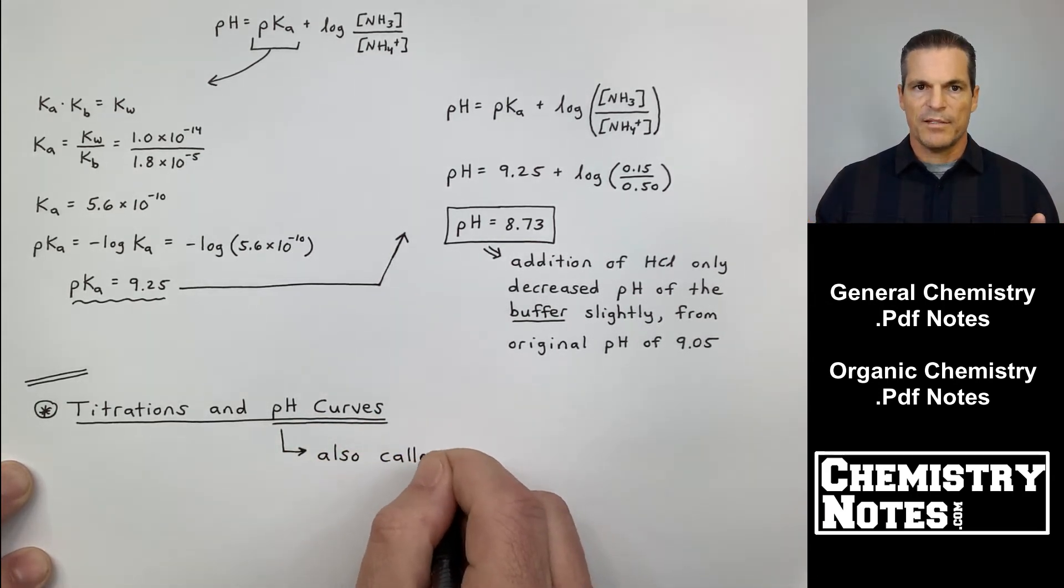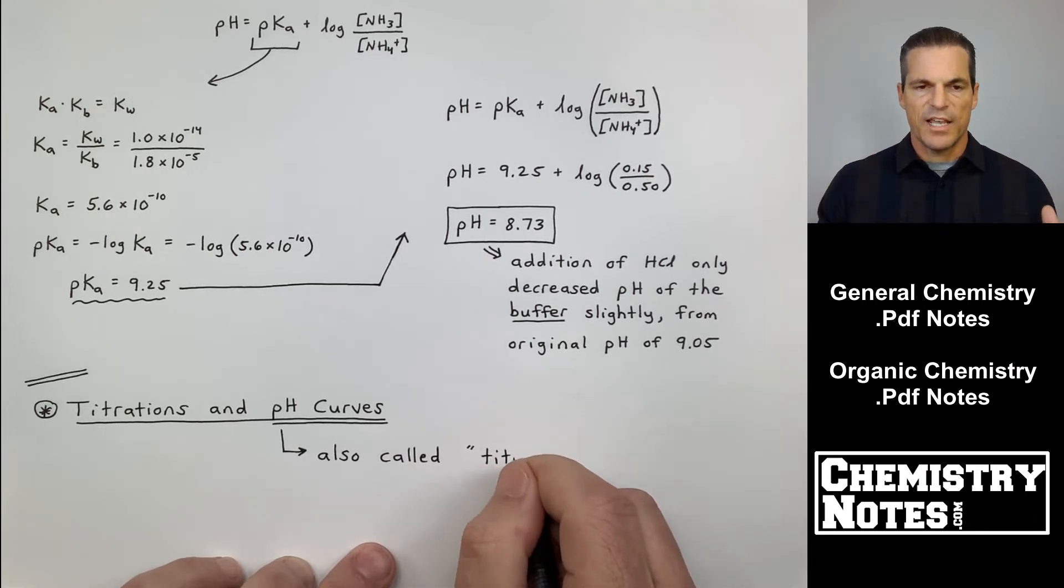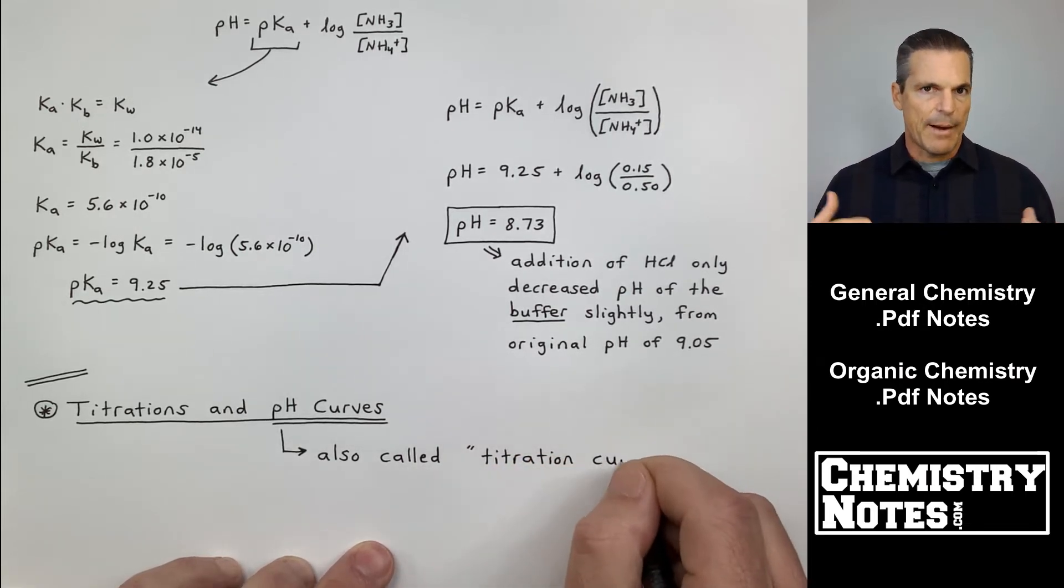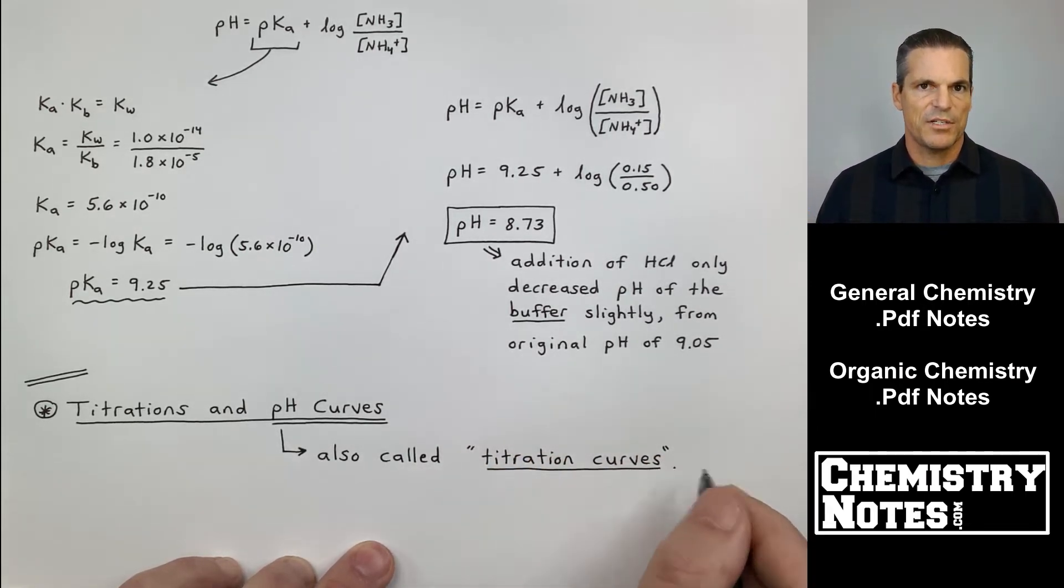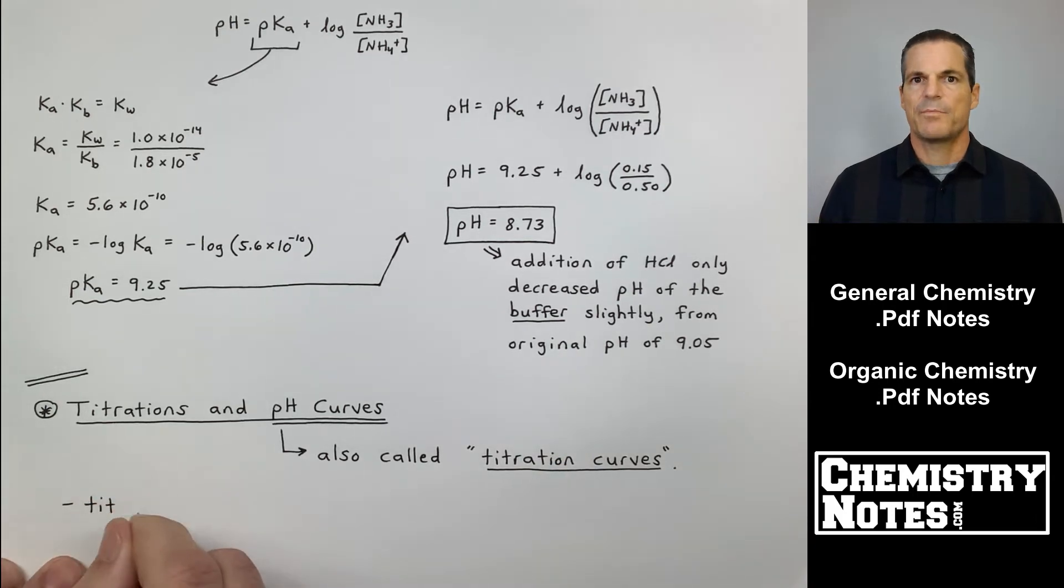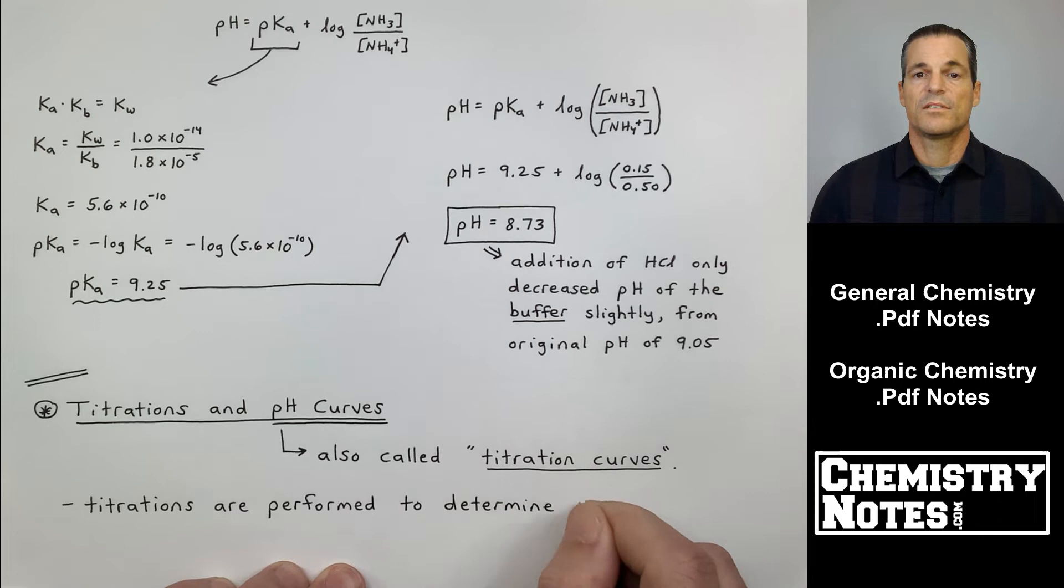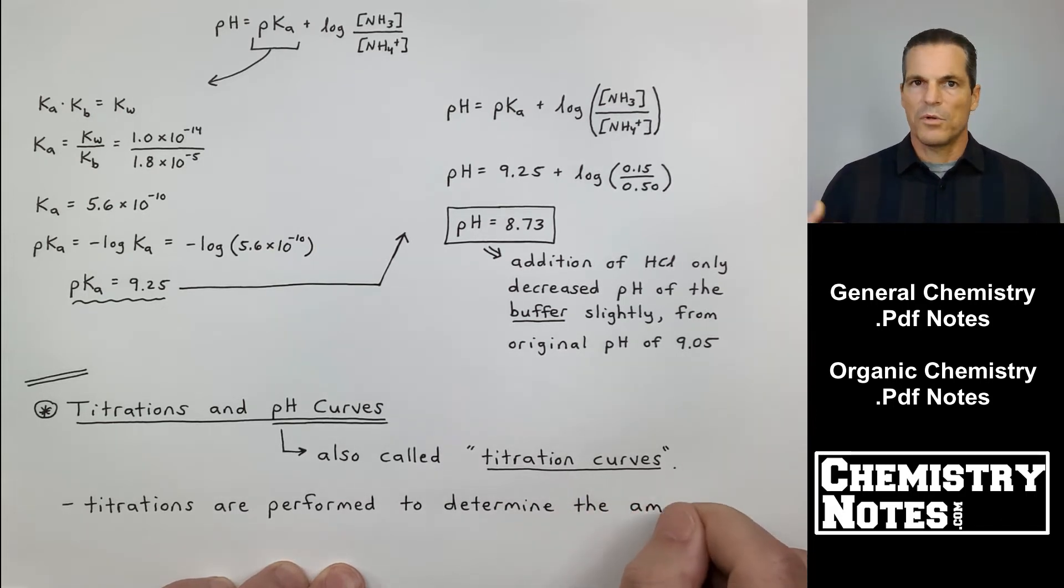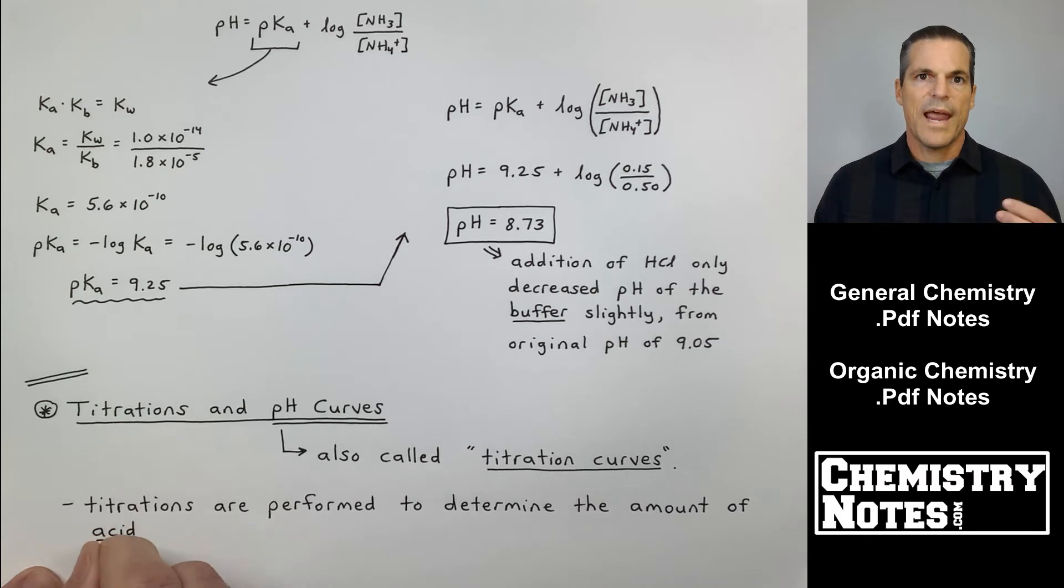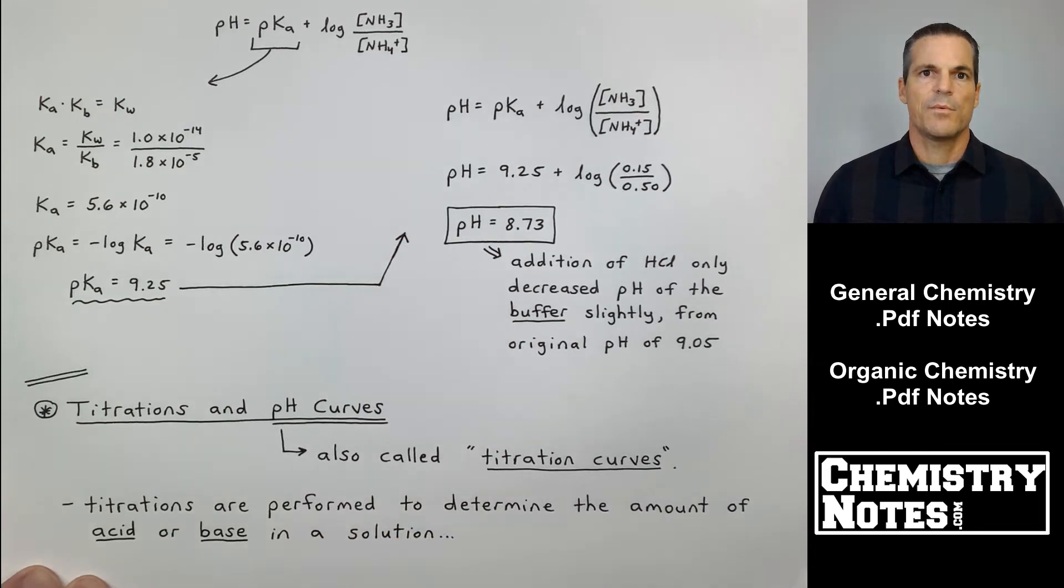So I want to switch gears for a little bit and start to get into kind of like a visualization of a laboratory technique called titrations. So I'm going to draw a burette on the next page and all this stuff, but titrations and pH curves is our next topic. Titrations and pH curves, also called titration curves. And this is all related to buffers and the addition of base over time or acid over time to a solution. So it's certainly related to buffers.